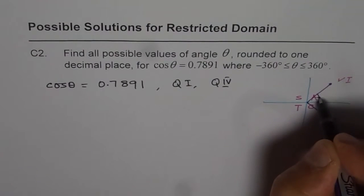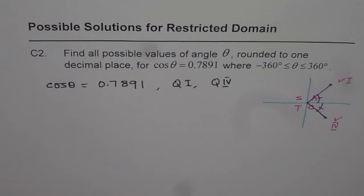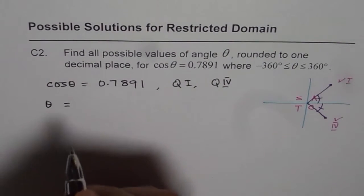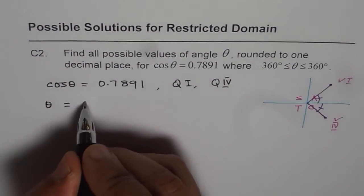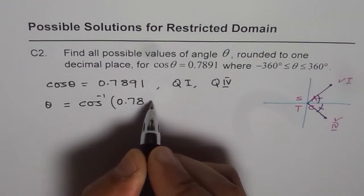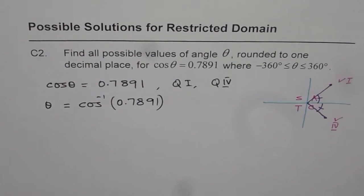And of course these two are the angle, the acute angle thetas. So we need to find these two angles. So let us find that out. Cos theta is equal to 0.7891 means theta equals to how much? It is cos inverse of 0.7891. So now we can use calculator to find this value.